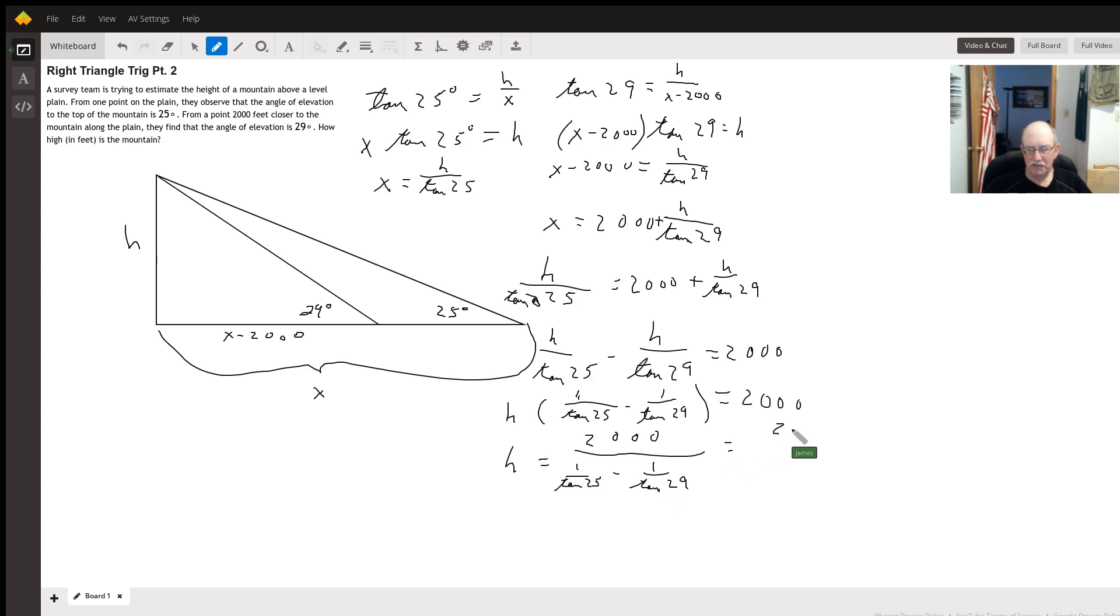Alright, let me get my calculator. Make sure I'm in degree mode. 1 divided by the tangent of 25 minus 1 divided by tangent of 29.